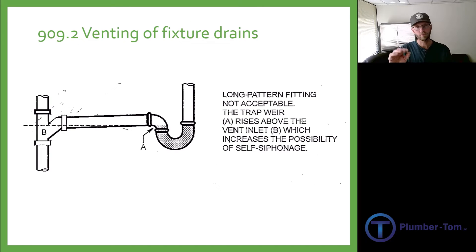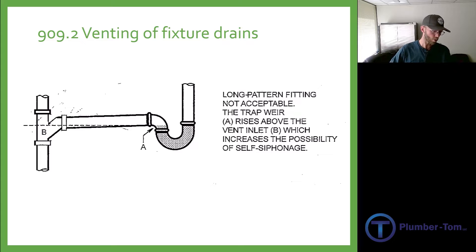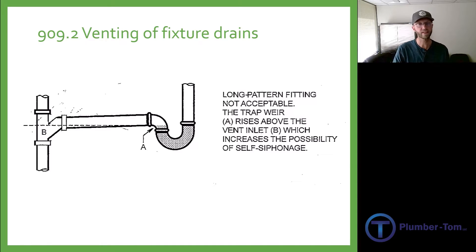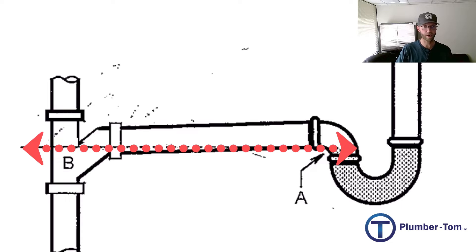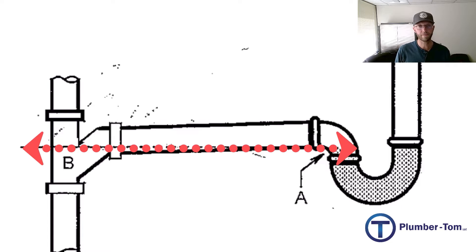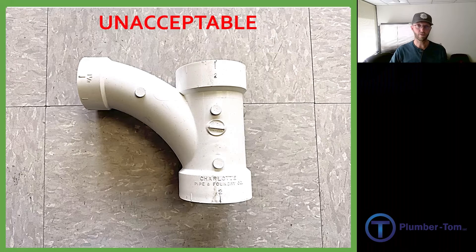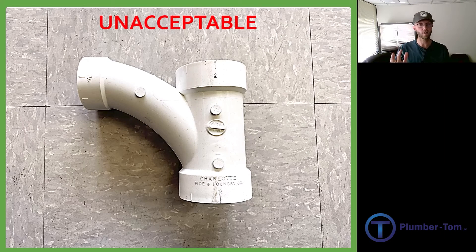Section 909.2 — read this with me: the total fall of the fixture drain due to the pipe slope shall not exceed the diameter of the fixture drain, nor shall the vent connection of the fixture drain, except for water closets, be below the weir of the trap. This is what was just demonstrated. The perforated line shows us the bottom of that trap weir. If that comes above the connection point of the vent over on that stack, then we lose our vent and that's going to affect the flow. For that reason, in a vertical application, long sweep fittings are not acceptable because they cut off that vent so quickly.